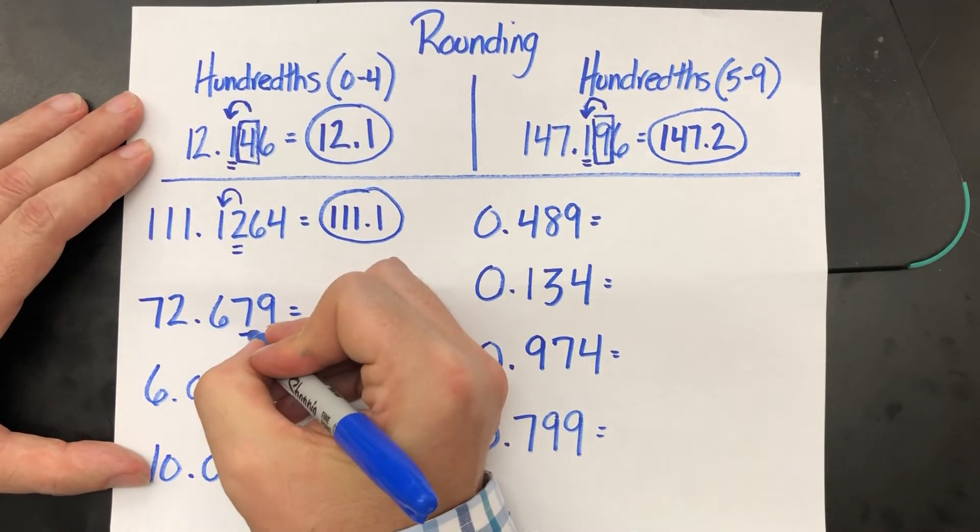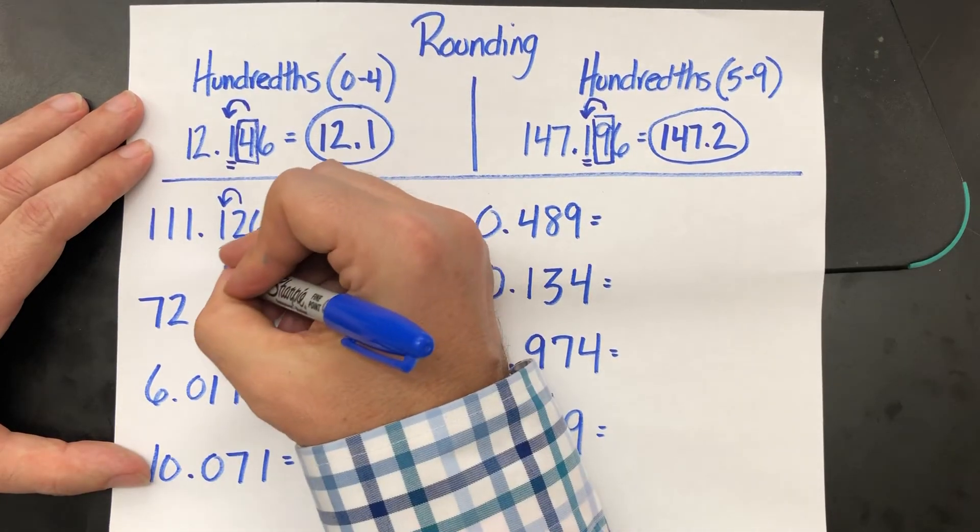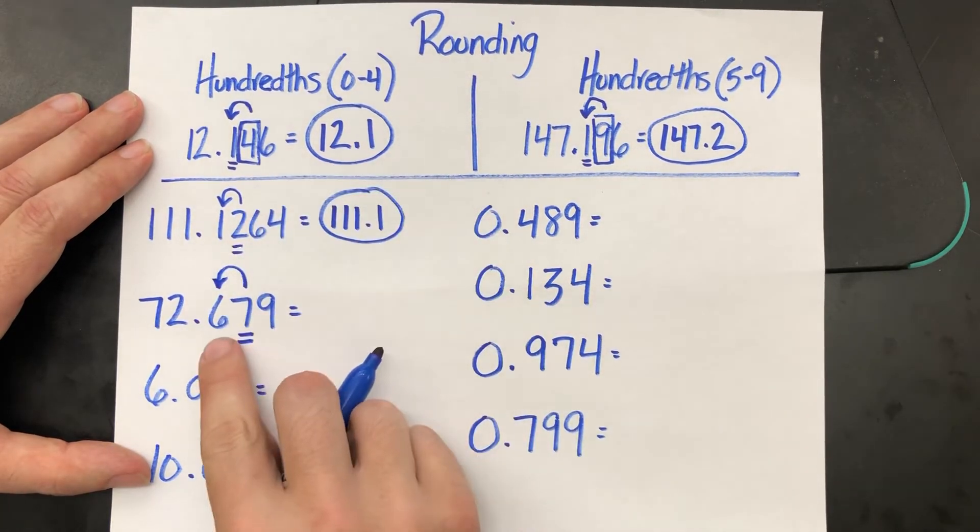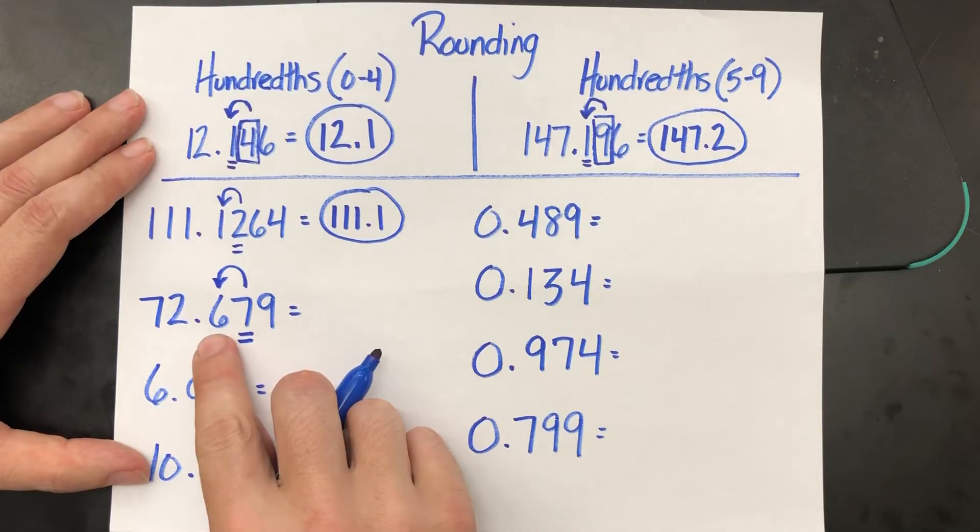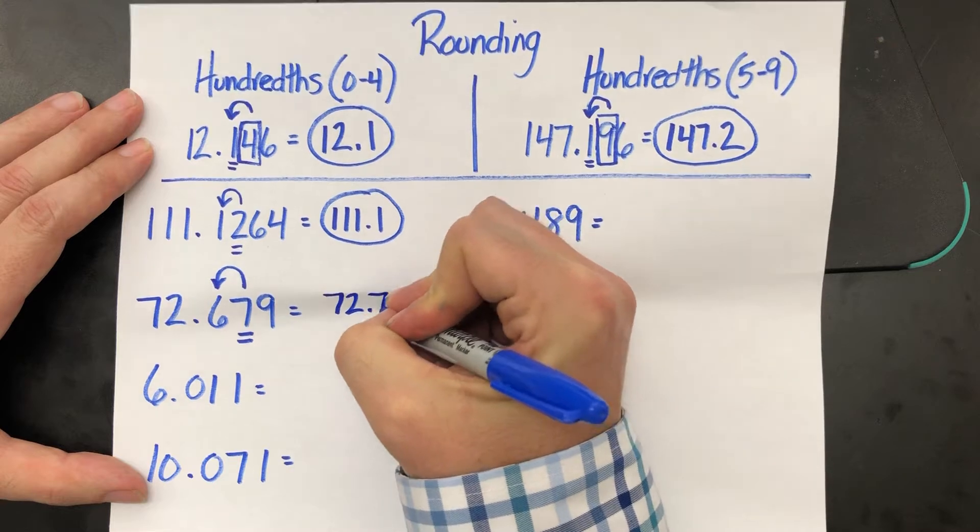Seventy-two point six seven nine. The seven in the hundredths, that is between five and nine. It's going to make the six in the tenth spot jump up a value. Seventy-two point seven.